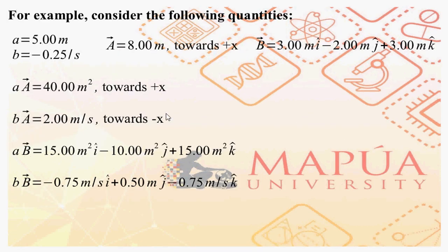To illustrate what we just talked about, consider the following quantities. You have scalar A equal to 5 meters, scalar B equal to negative 0.25 per second, vector A equal to 8 meters towards the positive x direction, and vector B expressed in unit vector notation: vector B equals 3 meters î minus 2 meters ĵ plus 3 meters k̂.